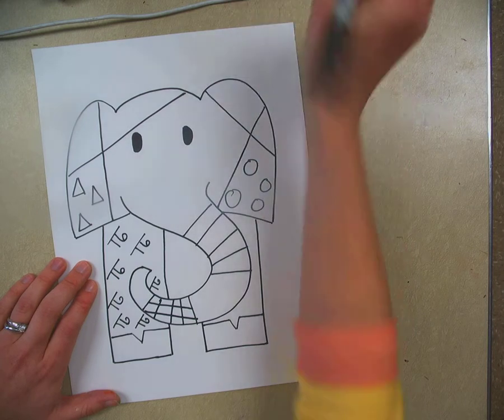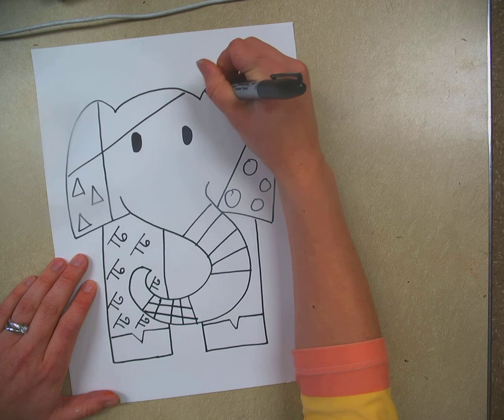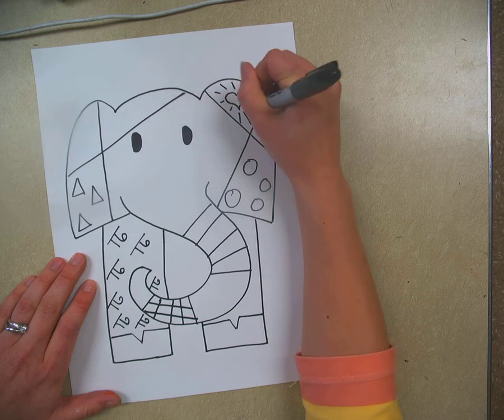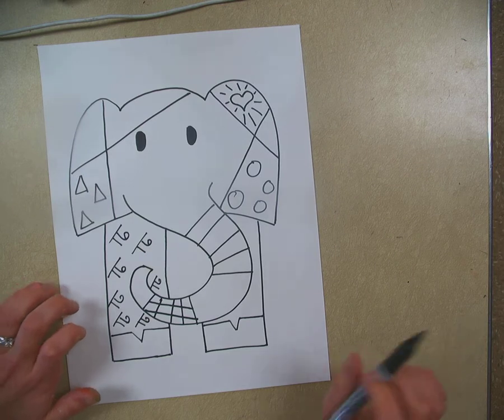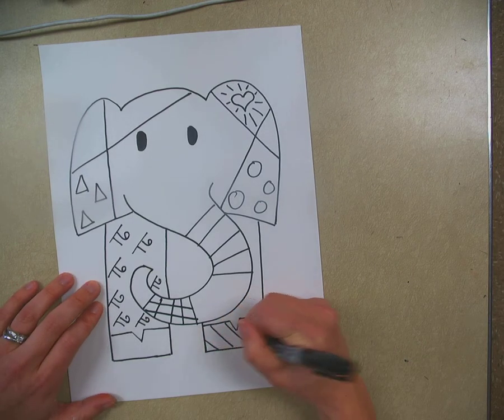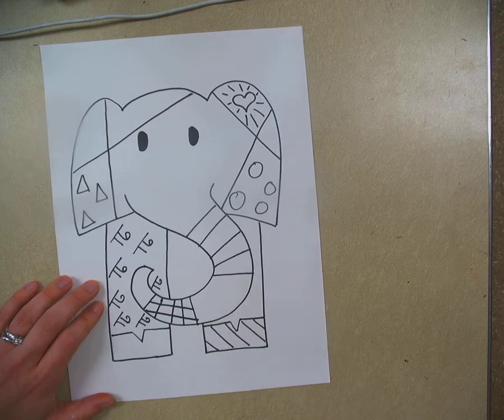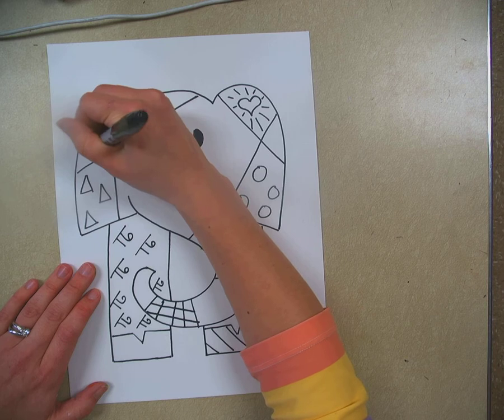I'm going to do a heart up here and I'm going to draw some lines around it. Now, something that we didn't get to see in the example is that Romero also does a crazy background with his animals. I'm going to do one more pattern here.